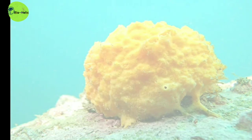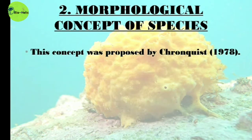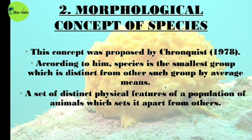The Morphological Species Concept was first proposed by Cronquist in 1978. According to him, species is the smallest group distinct from other such groups by ordinary means. Morphology refers to a set of distinct physical features of a population of animals which sets it apart from others.